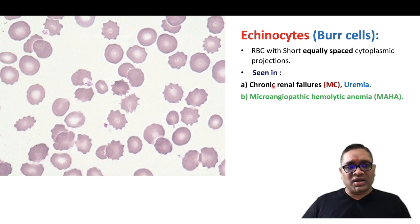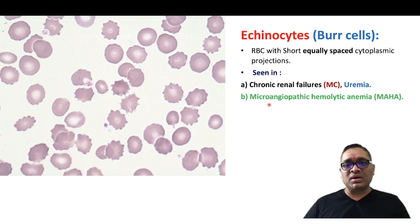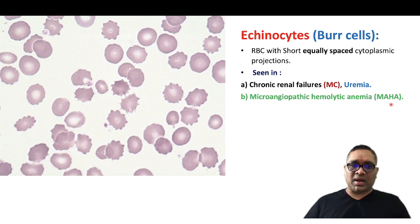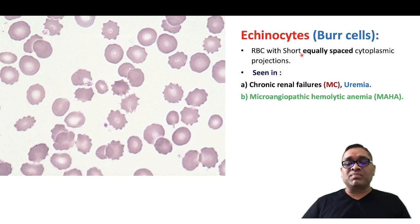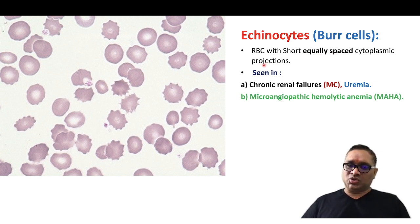Echinocytes are commonly seen in chronic renal failure, uremia, and microangiopathic hemolytic anemia. Just remember: BR will be having BARABAR (equally spaced) cytoplasmic projections. Keep learning. Enjoy learning.